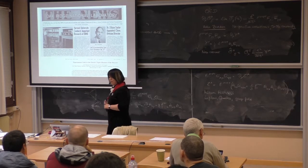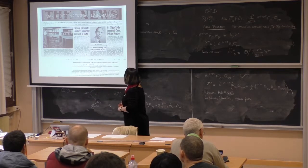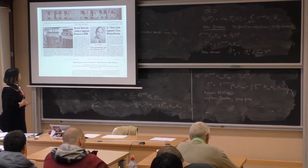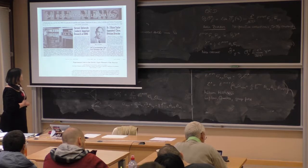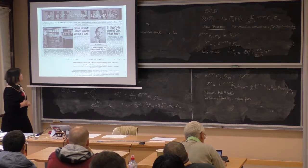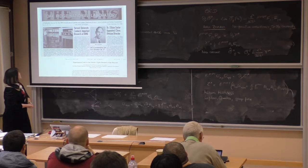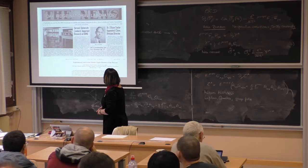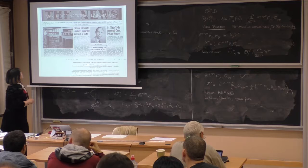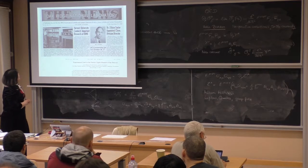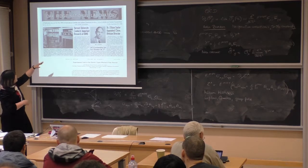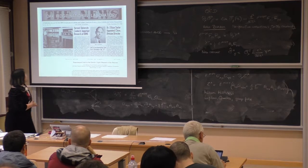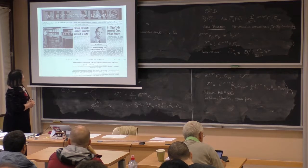That's the motivation for measuring EDM: you want to test whether time reversal symmetry holds in our physics model. The first person to do this measurement was Norman Ramsey together with his student Smith and Purcell. They set up an experiment at a nuclear reactor in Oak Ridge National Laboratory in Tennessee. They used a linear array setup: a neutral beam from the reactor, a series of spin-analyzing magnets, magnetic field, electric field, and a neutral detector. This was published in 1950.